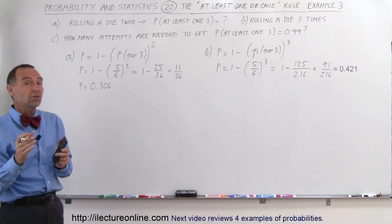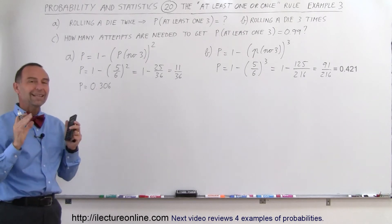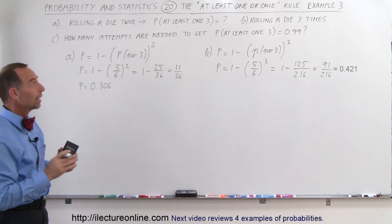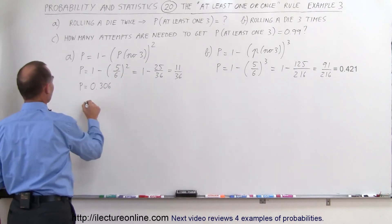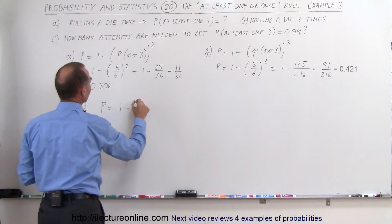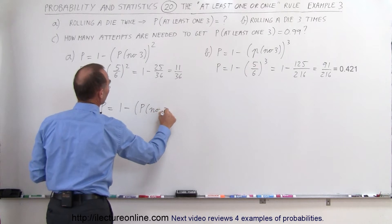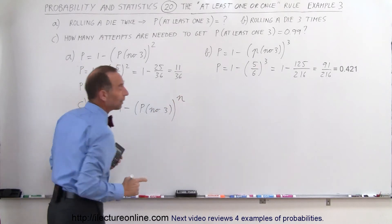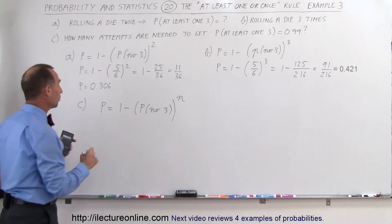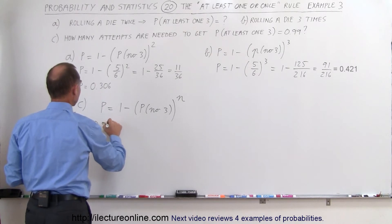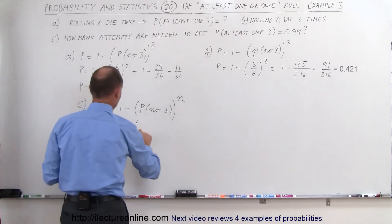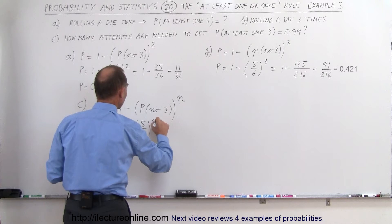Now you may ask yourself: how many tries do we have to have in order to be at least 99% sure — a 0.99 probability — that we'll get at least one three? For part C, we write the probability equal to one minus the probability of no three on any one try, to the nth power. The question is: what is n going to be equal to? The probability we're trying to achieve is 0.99, so we have 0.99 equals one minus five sixths raised to the nth power.